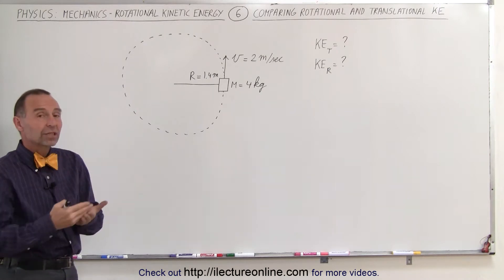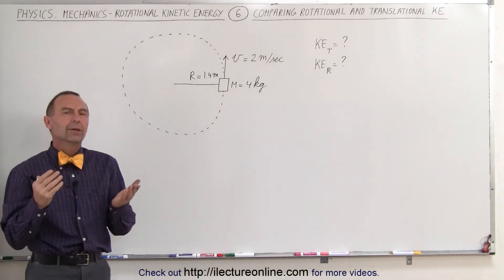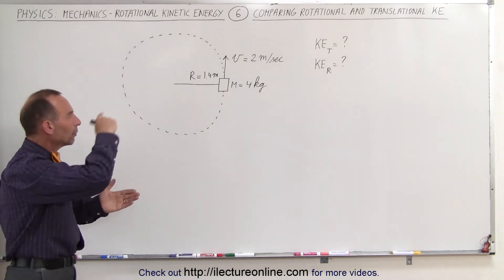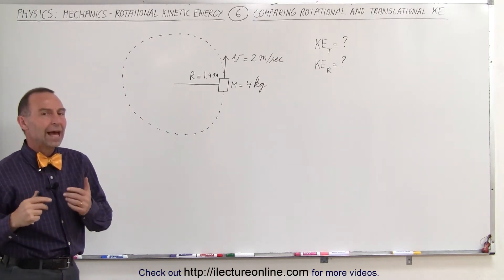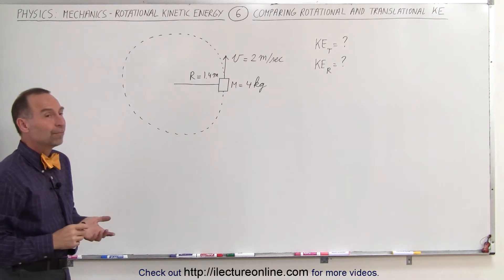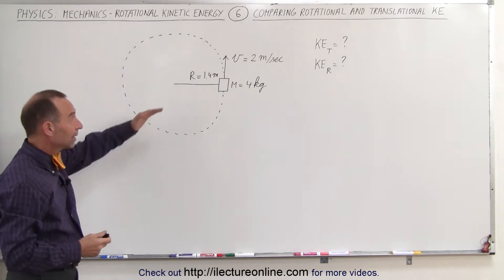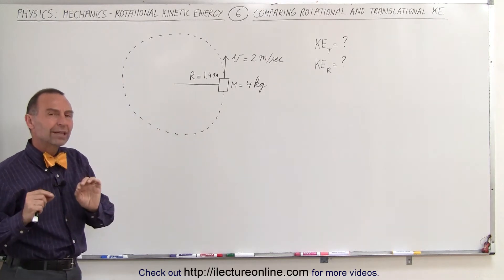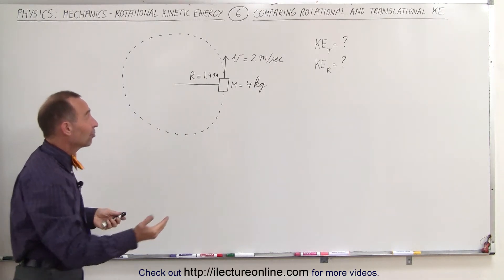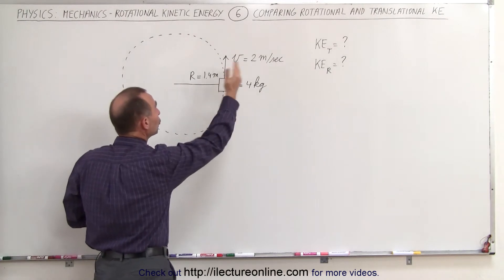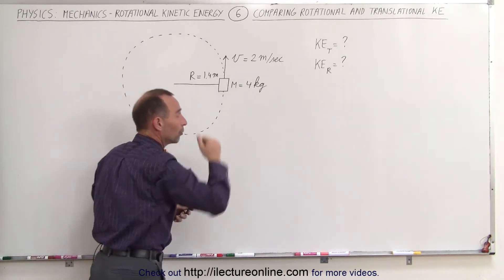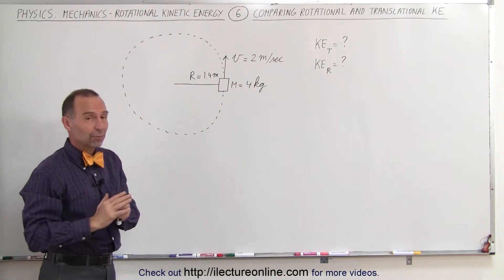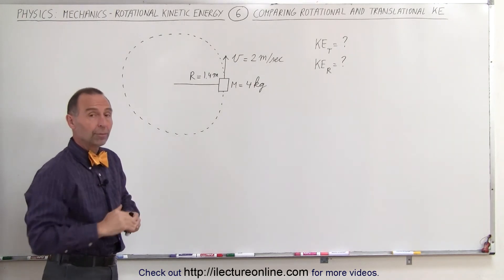We're going to calculate the translational kinetic energy. Wait a minute — how can you calculate the translational kinetic energy? Because it's rotating around in a circle, so shouldn't it only have rotational kinetic energy? Well, it does, and we're going to calculate the rotational kinetic energy as well, but we're also going to do it in terms of the translational kinetic energy. After all, we have an object that's moving at 2 meters per second along a circular path, which is still translational motion. It doesn't have to be a straight path — it could be a circular path.